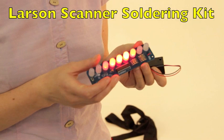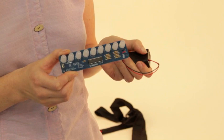Hi, I'm Lynn Nohr with Evil Mad Scientist Laboratories and today we're working with a Larson scanner. A Larson scanner is a kit that you build and it makes a red light that scans back and forth.